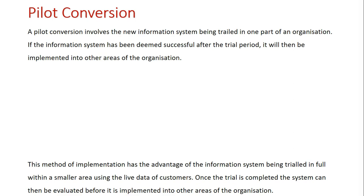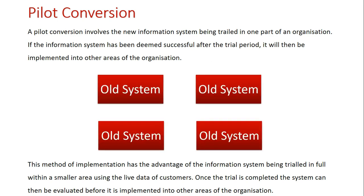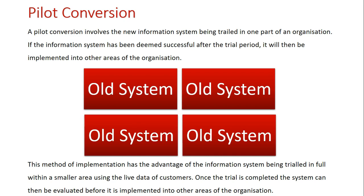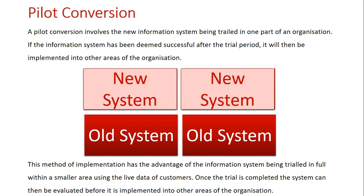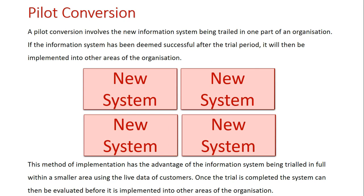The final method of conversion is the pilot method conversion, and this is where the new system is trialed in part of an organization. If the information system is deemed successful after a trial period, it will then be implemented into other areas of the organization. Here's our organization split into four different departments — one of the departments, which may be a department within a store or a store running in a larger geographical area of a greater organization, starts using the new system for a set period. It might be three months or a year, but once it's determined to be a success, other parts of the organization then adopt it, and if it's a full success, it's adopted in full.